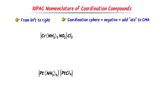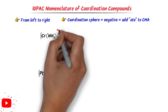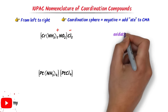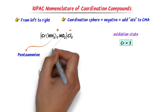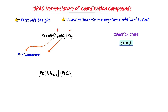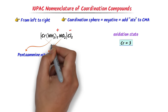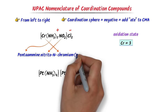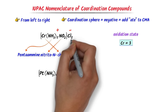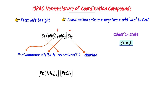Now consider this coordination compound. I write positive charge and negative charge. The oxidation state of chromium is 3. I write 'pentaamine'. For this NO2, I write 'nitrito-N'. For this chromium, I write 'chromium', and the oxidation state of chromium is 3. For the chlorine counter ion, I write 'chloride'. Thus I get 'pentaamine nitrito-N chromium(3) chloride'.